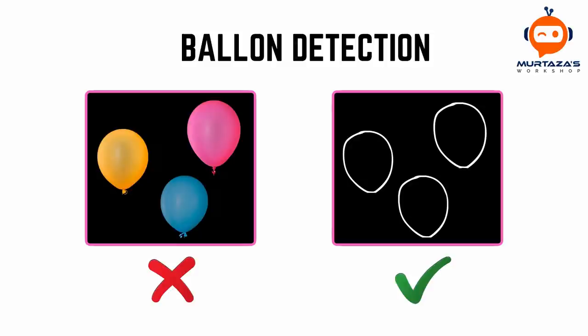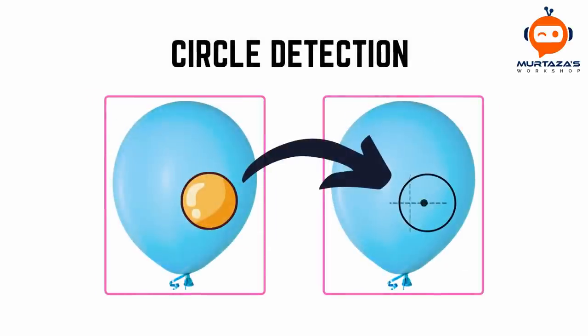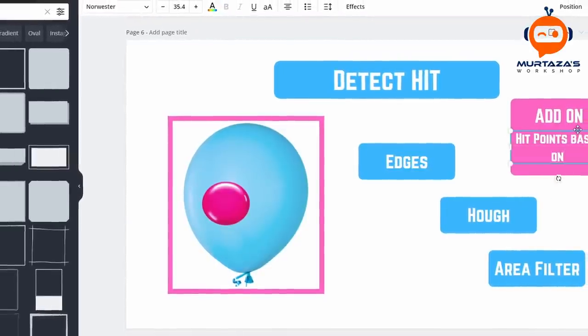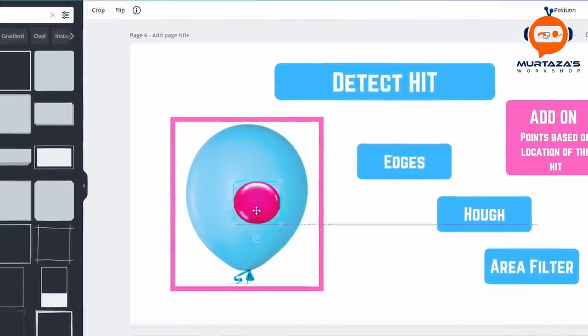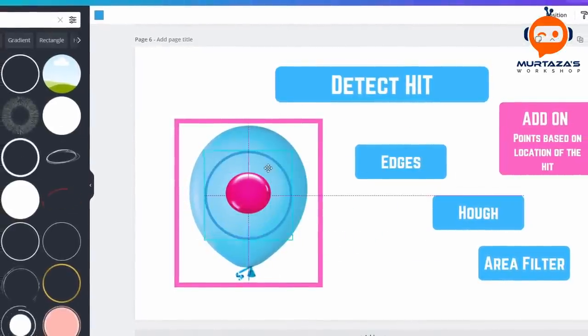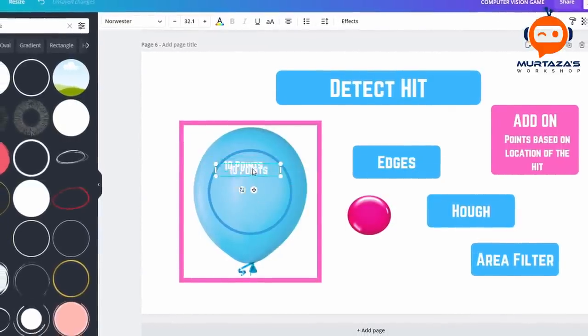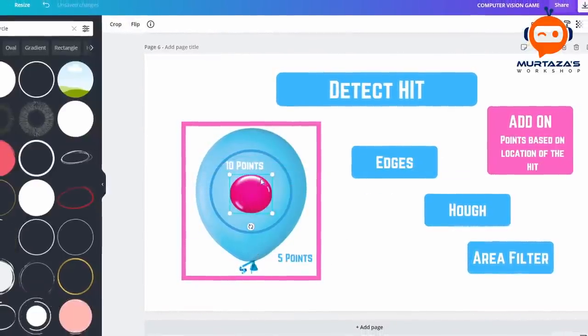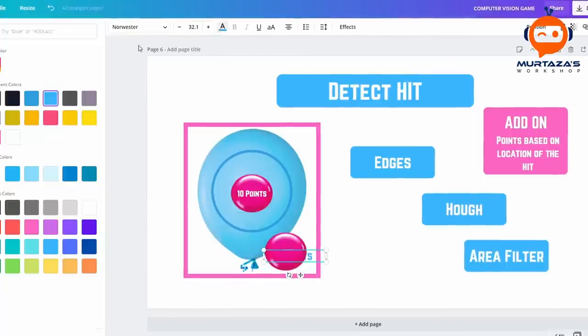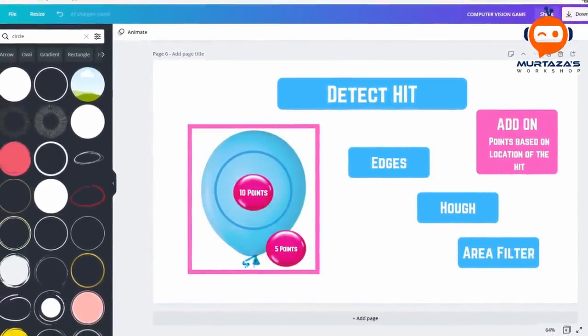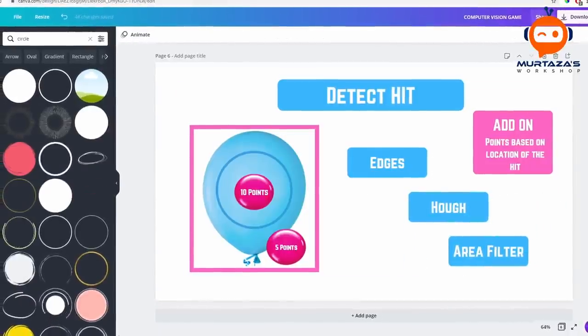To find the hit within the balloon, I decided to go with simple circle detection. At this point I started to daydream about all these different ideas I could implement, like a point system based on where you hit. But all of this was way too soon, so I simply shut my brain and continued.